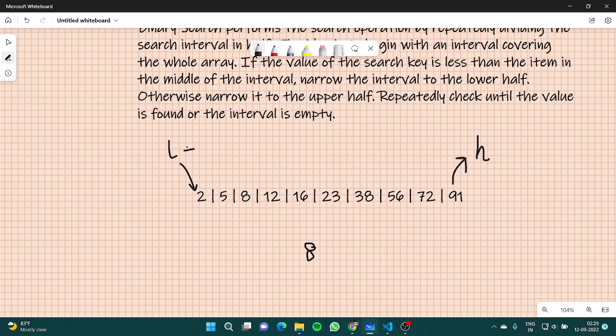So what does dividing mean? L is 0, using index 0, 1, 2, 3, 4, 5, 6, 7, 8, 9. And H is 9. So initially what we do is we find the middle of this whole interval. It should be 9 plus 0 by 2, that would be 4. So 0, 1, 2, 3, 4. This is going to be my middle.